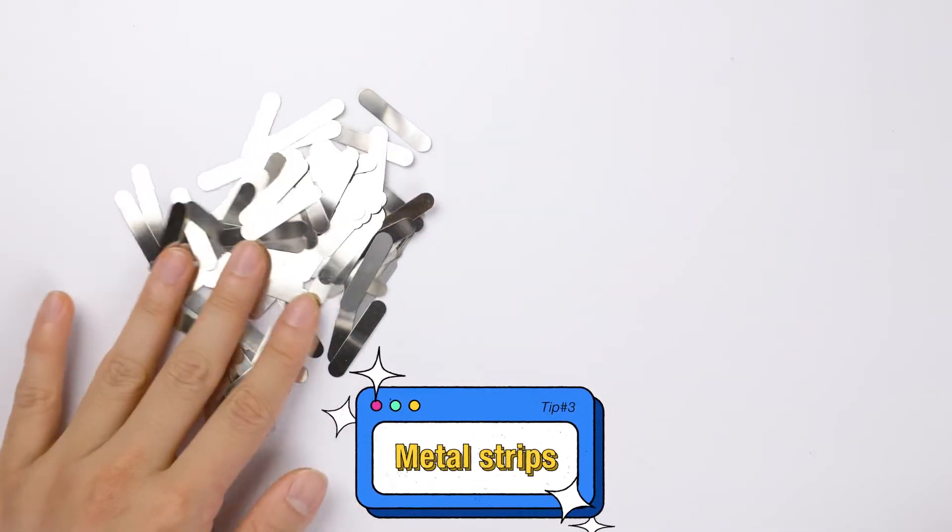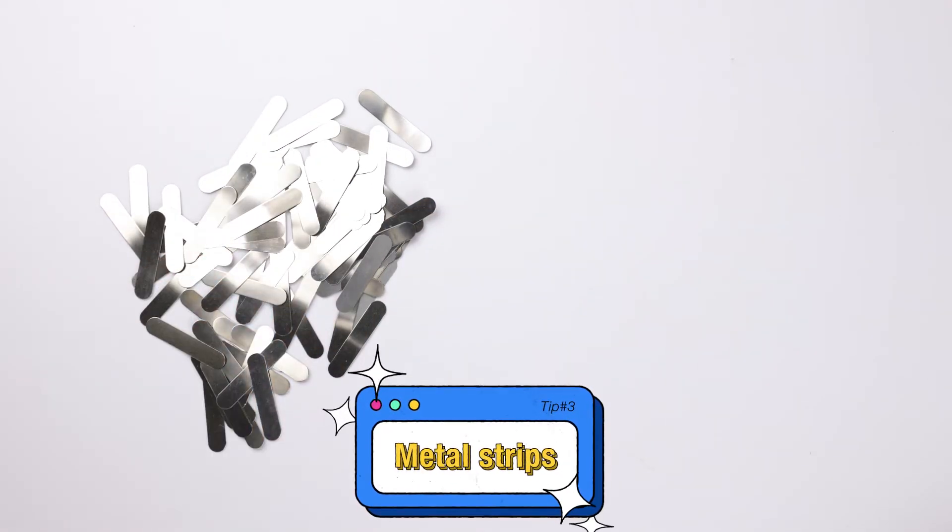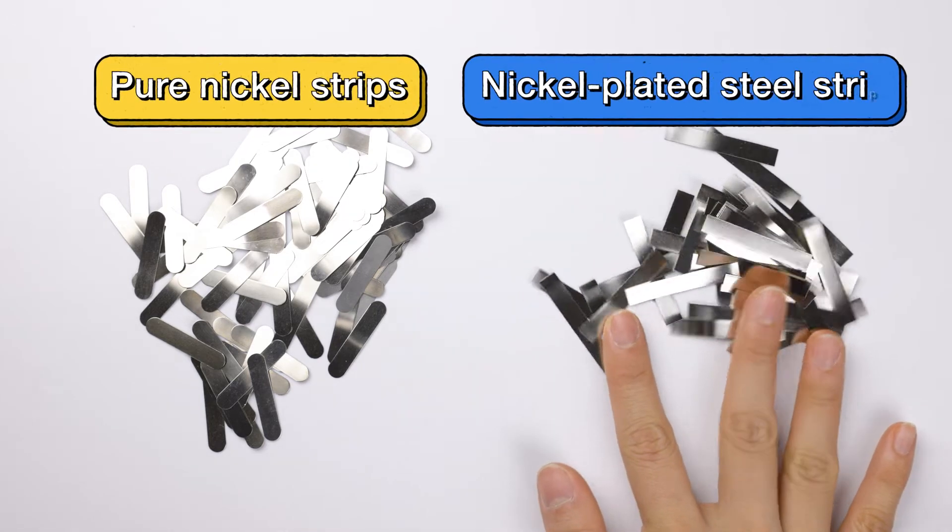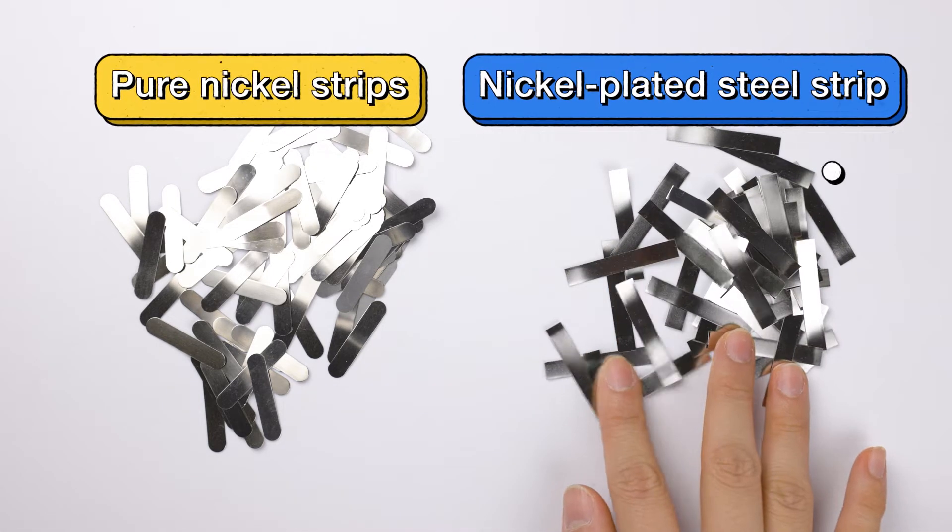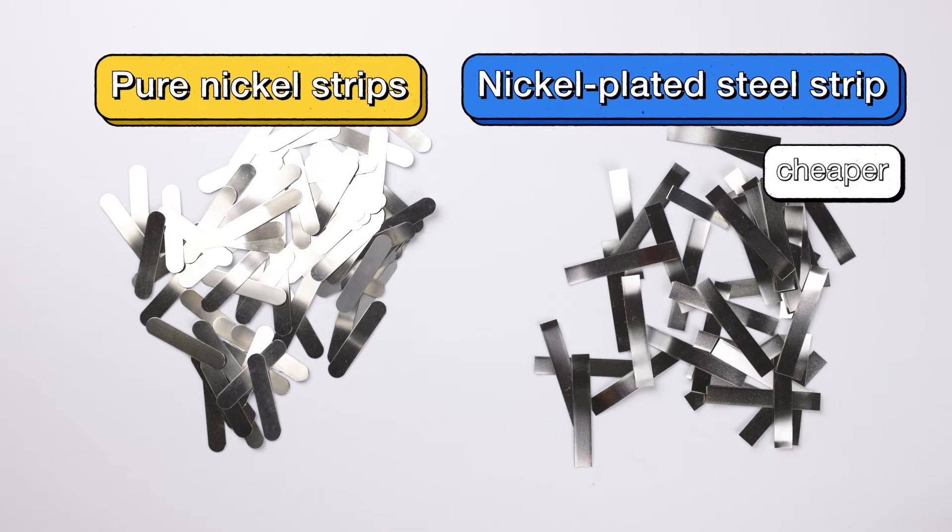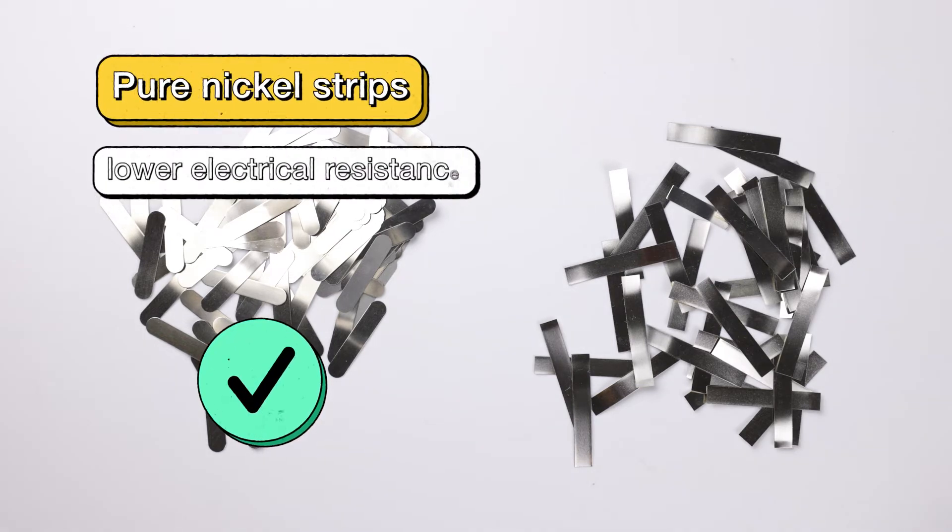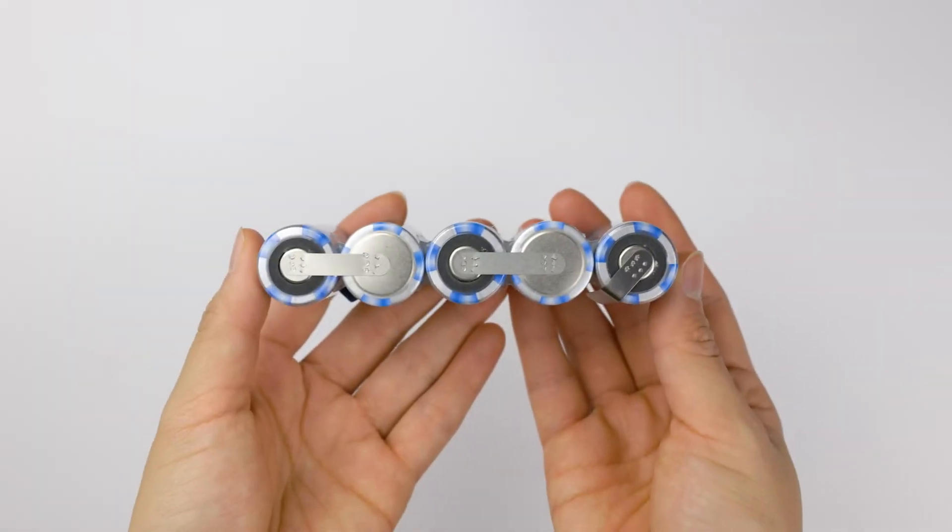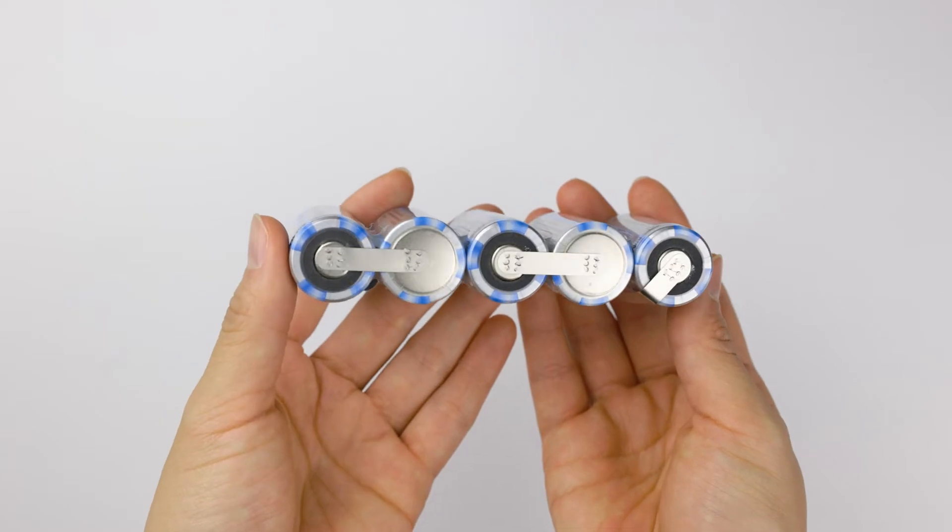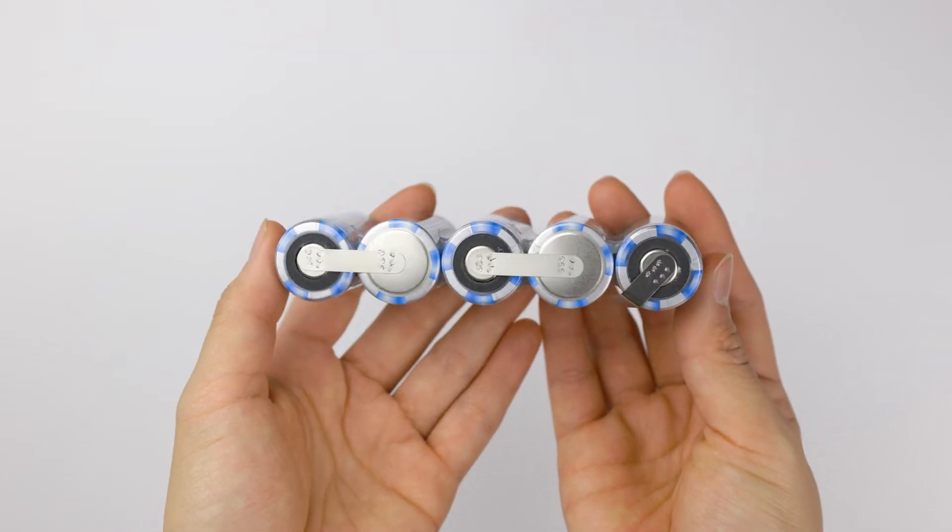The next tip is about the metal strips that are used to connect the cells together. There are two types that you can find on the market, which are the pure nickel strips and nickel plated steel strips. Although nickel plated ones are cheaper, we recommend choosing the pure nickel strips. It has a much lower electrical resistance. Using the pure nickel type, battery packs release less heat during charging and discharging, hence extending its lifespan.